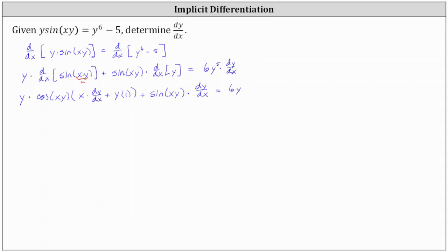And on the right, we still have 6y to the 5th times dy/dx. Now we need to solve the equation for dy/dx by first getting all of the dy/dx terms on the same side. Before we do this, let's distribute on the left to eliminate the parentheses. So here we have y times cosine(xy) times x dy/dx, which gives us xy·cosine(xy)·dy/dx. And then we have y·cosine(xy) times y, which gives us plus y squared times cosine(xy).